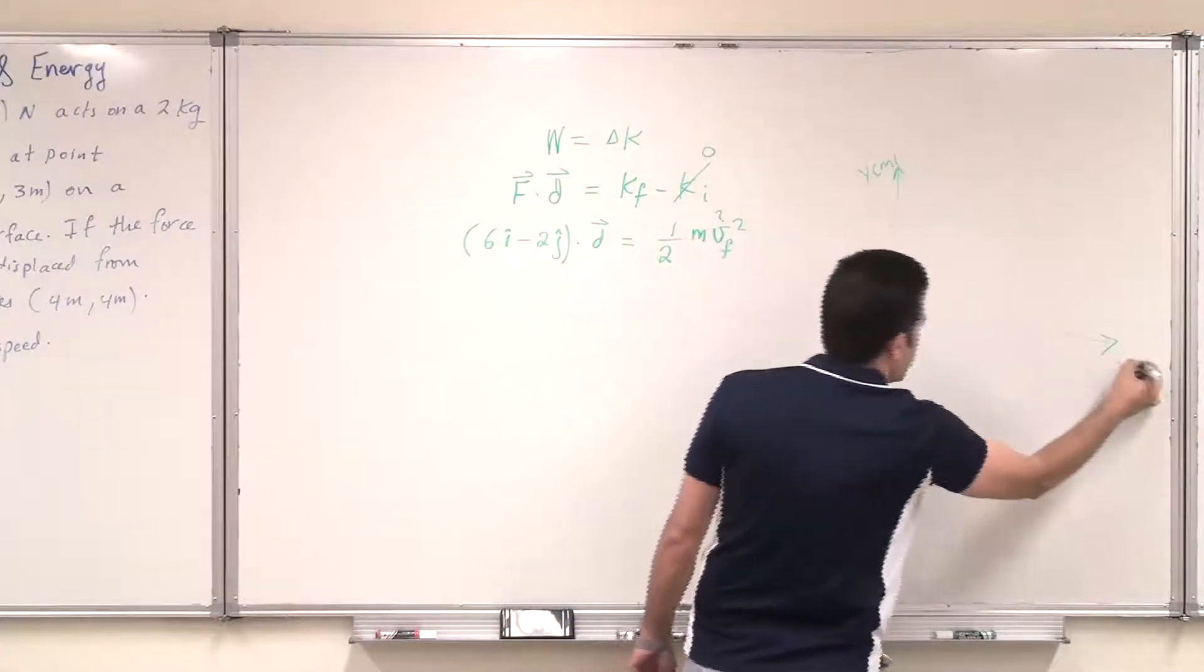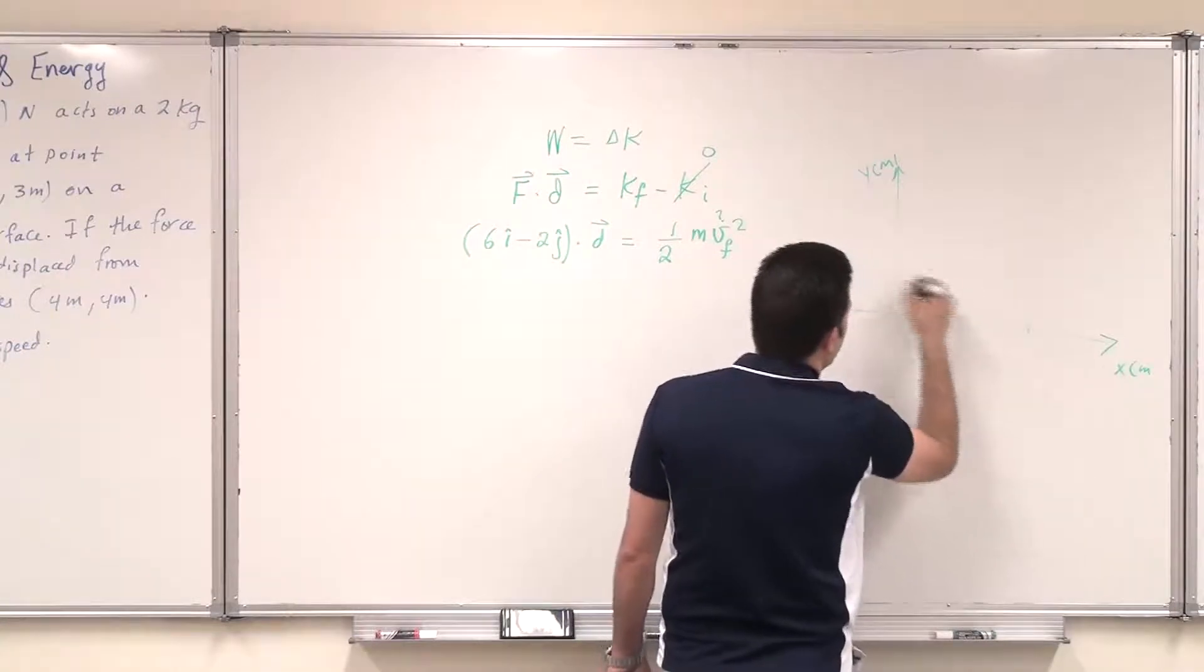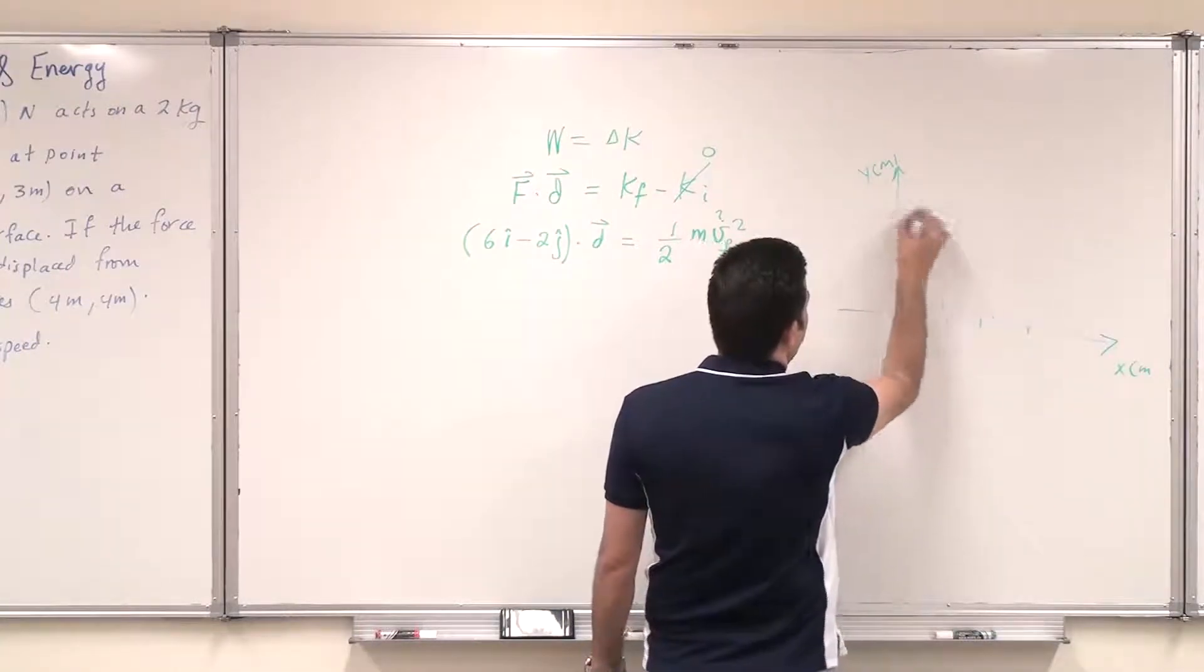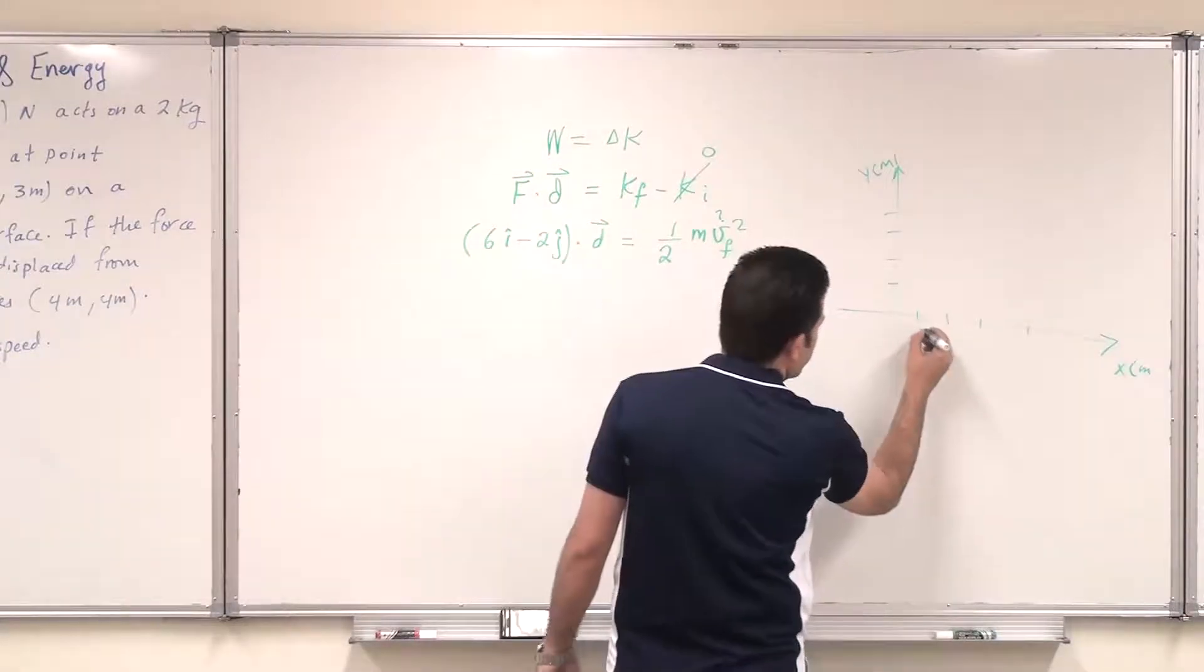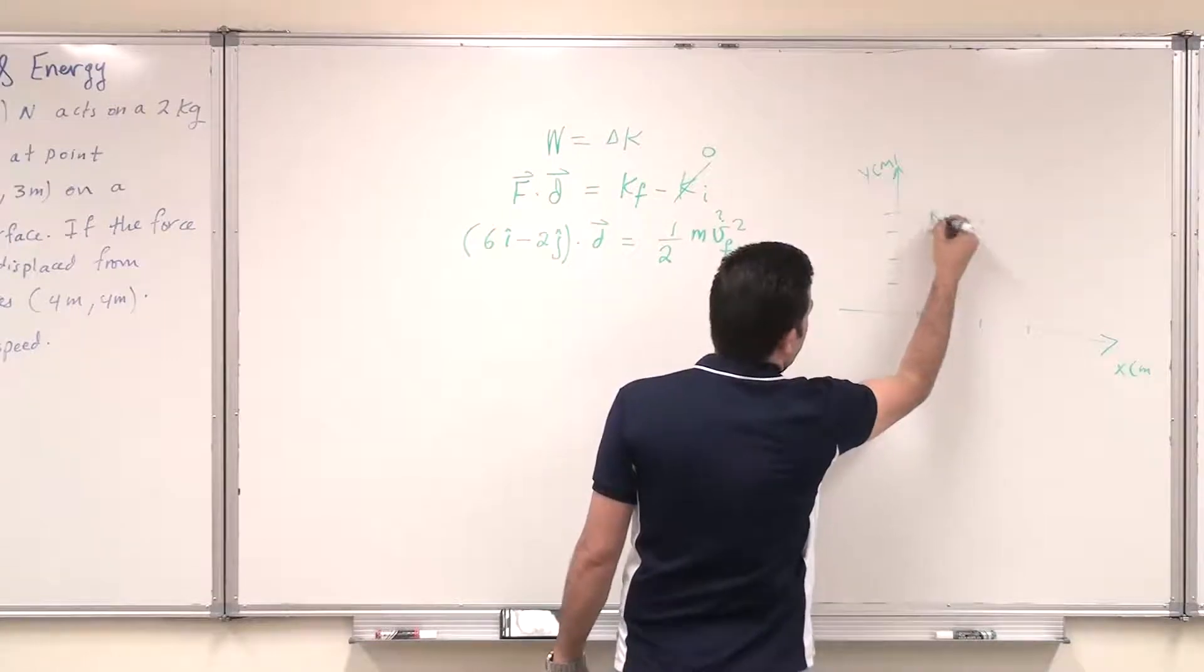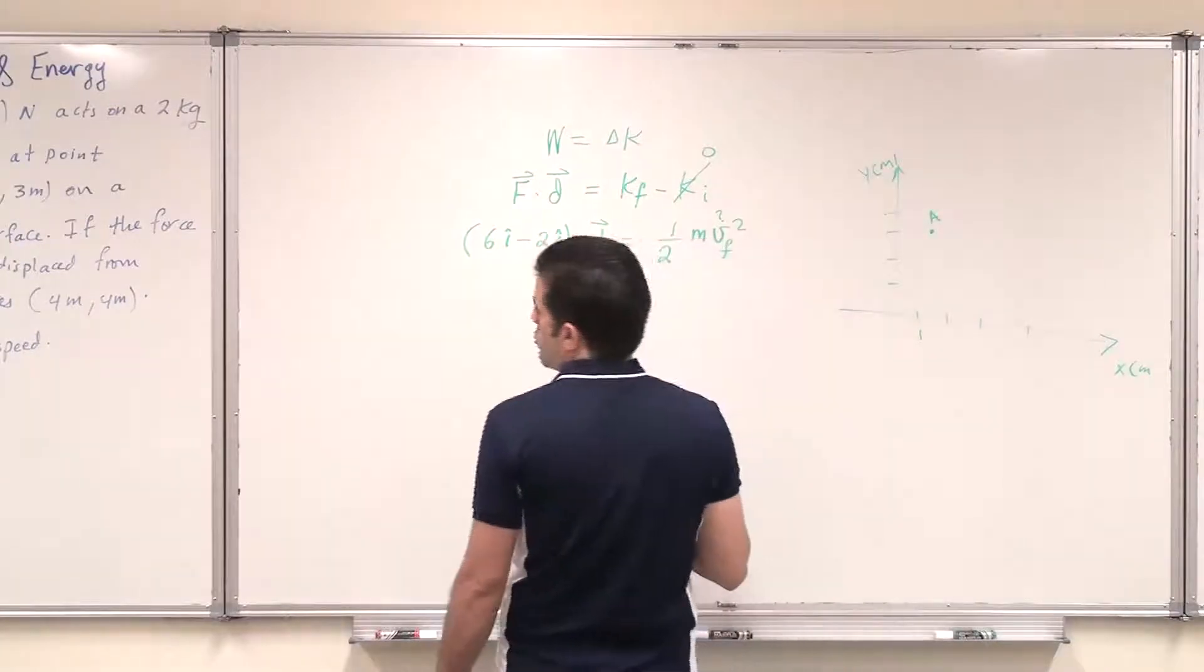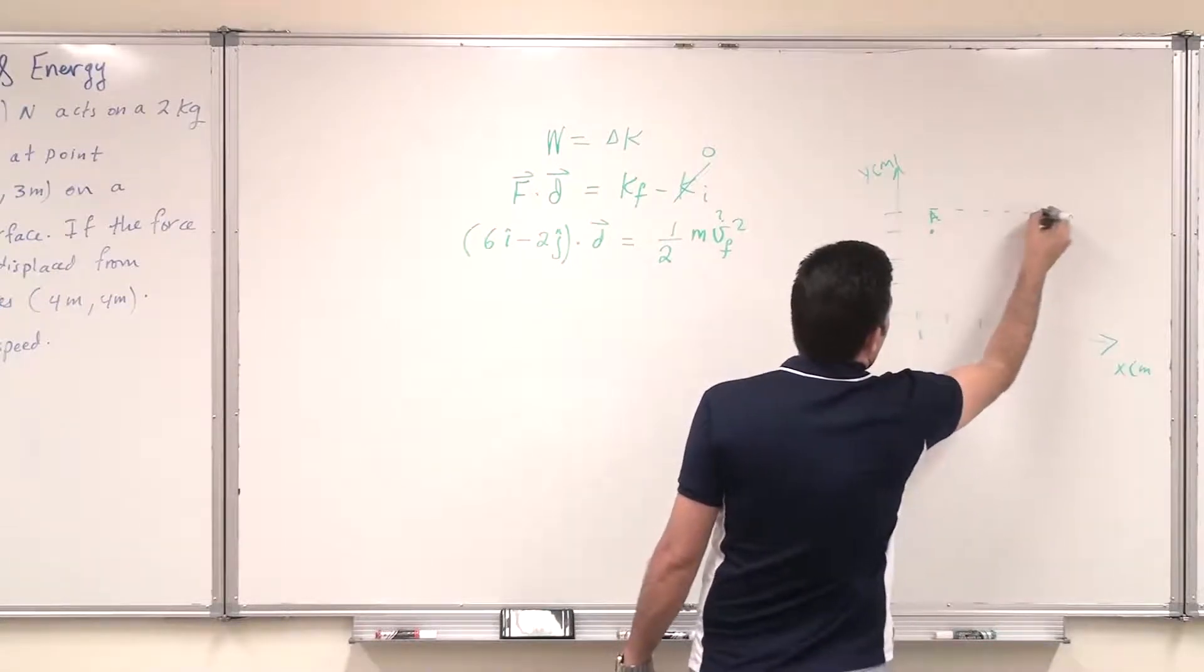Then I have the axes marked 1, 2, 3, 4. So point A is located at 1 and 3, and point B is located at 4 and 4.